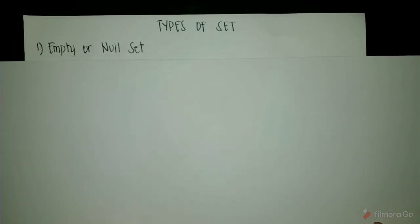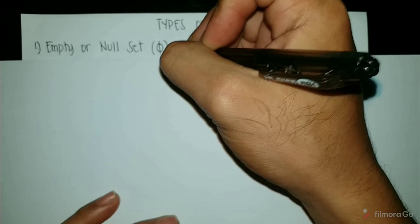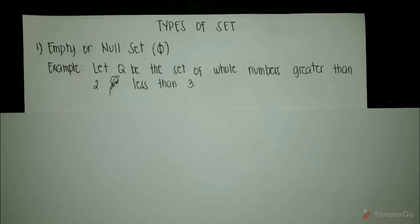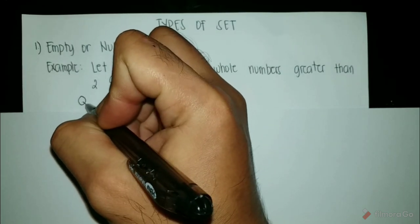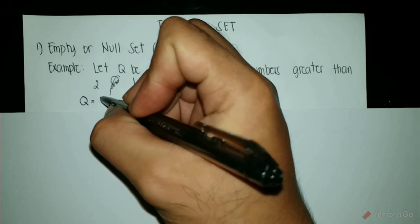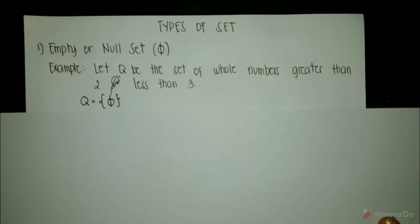First one is the empty or null set. An empty or null set is a set which does not contain any element, and it is denoted by the symbol phi. For example, let Q be the set of whole numbers greater than 2 and less than 3. There are no whole numbers between 2 and 3, therefore set Q is an empty or null set.